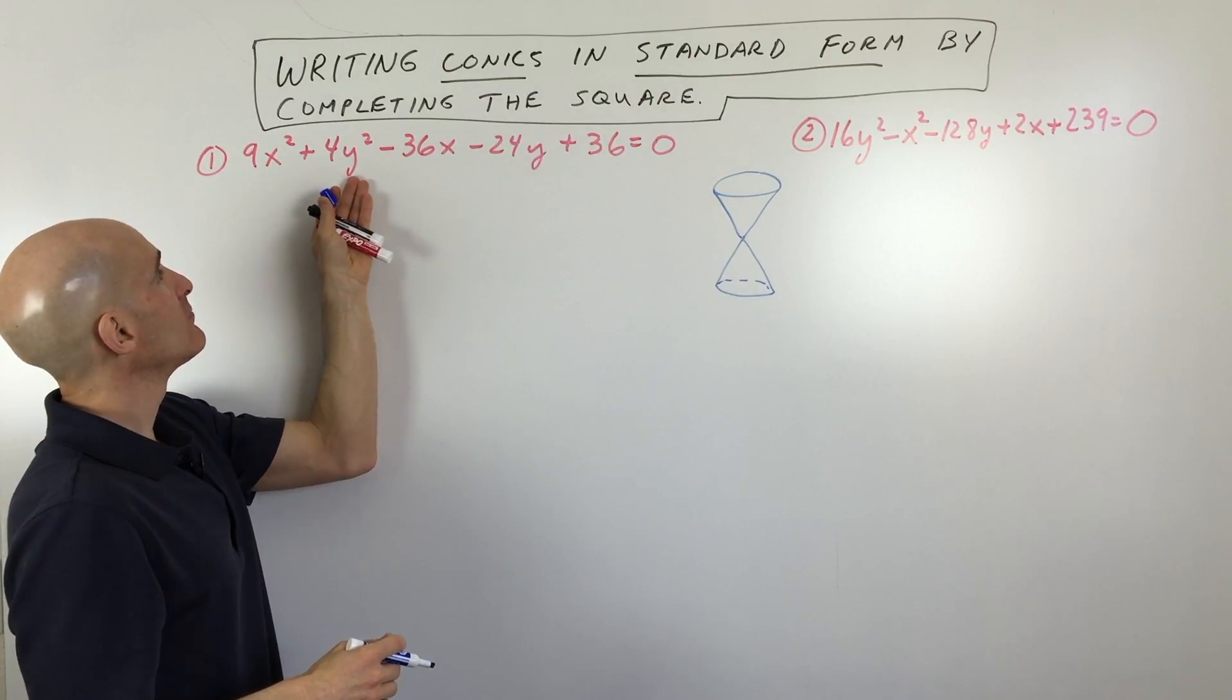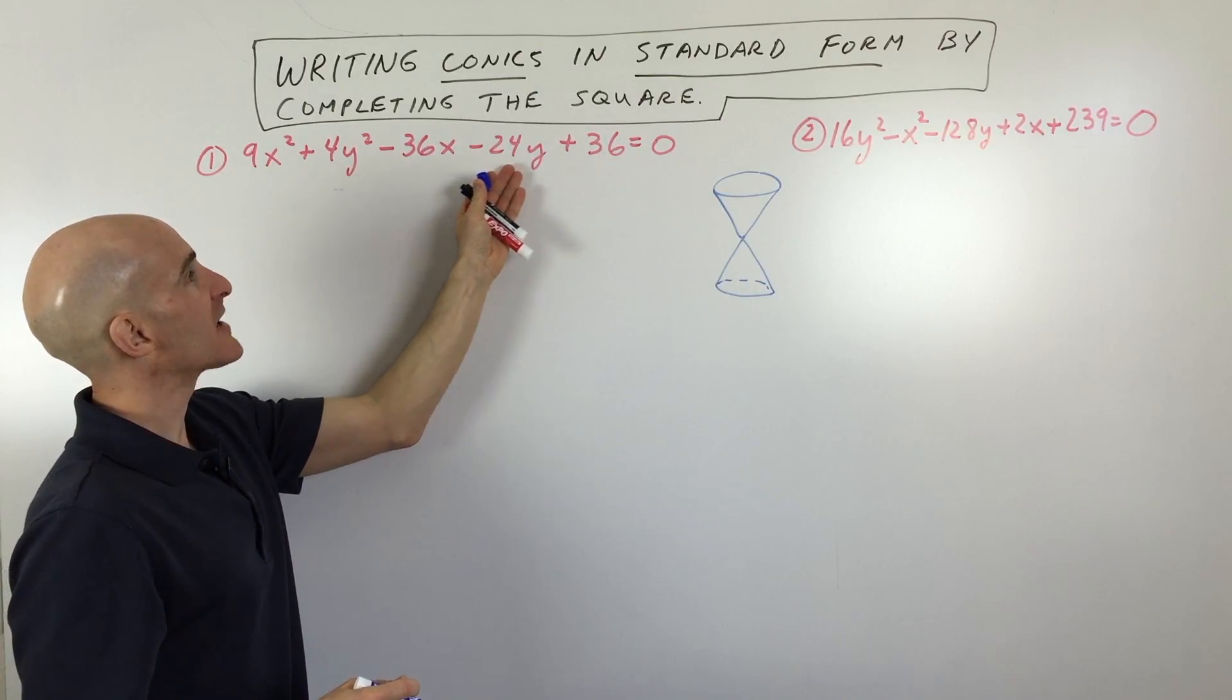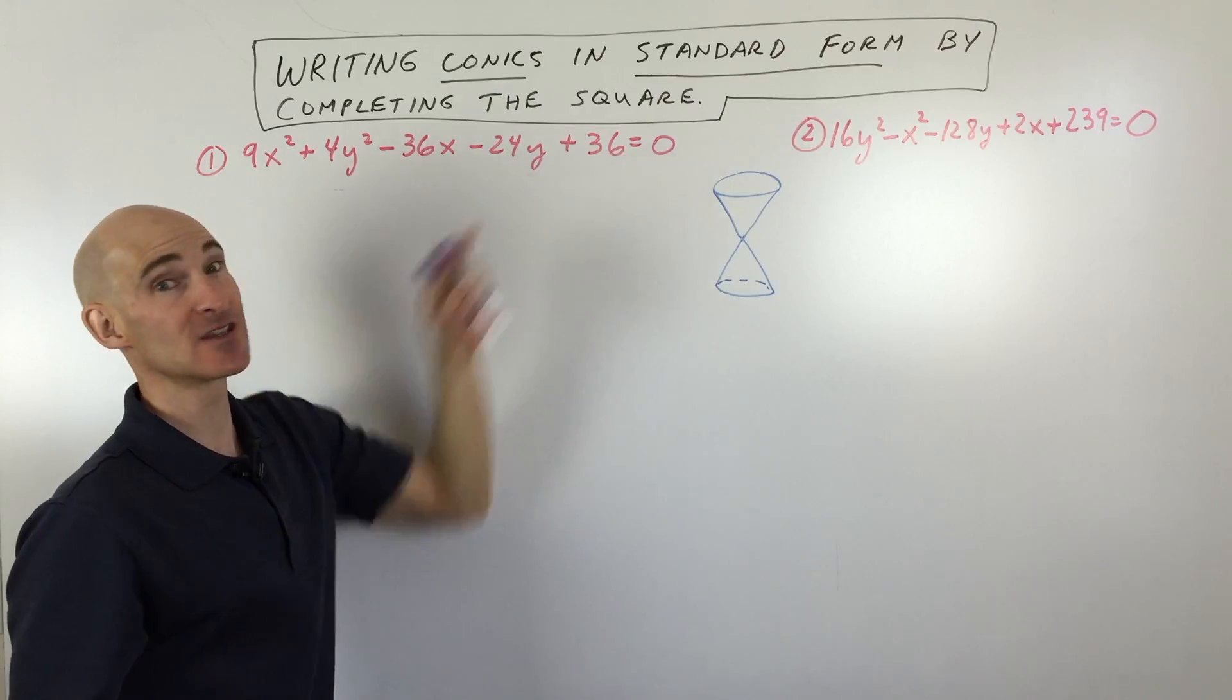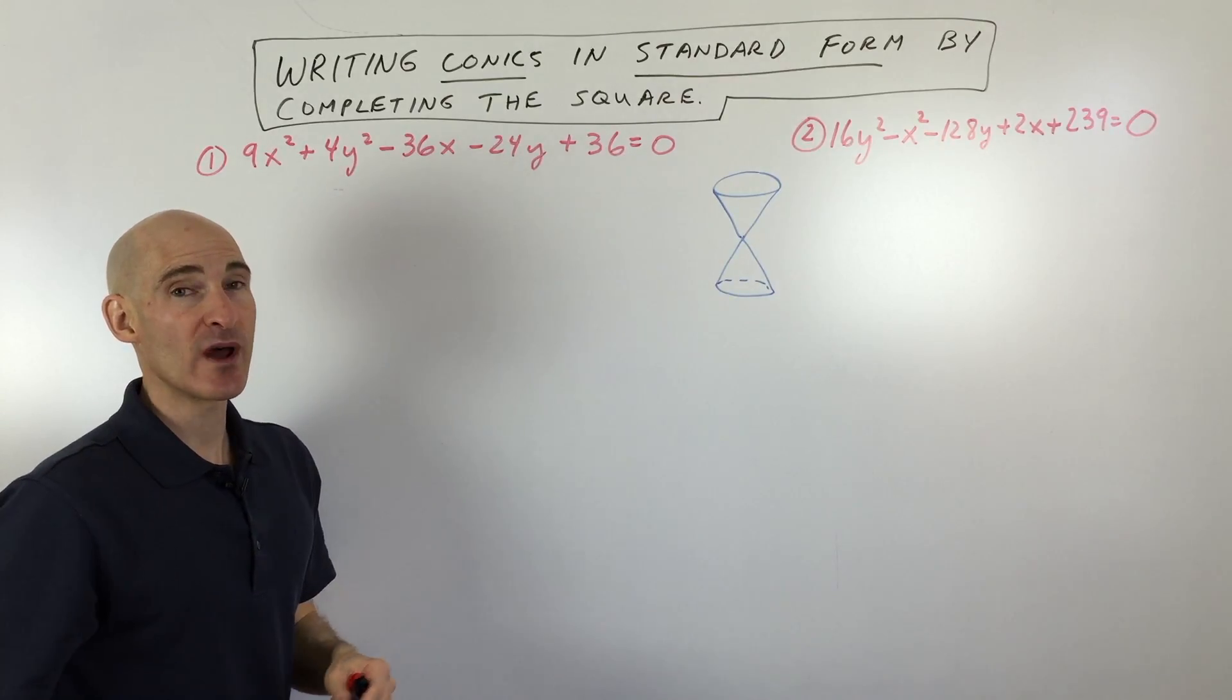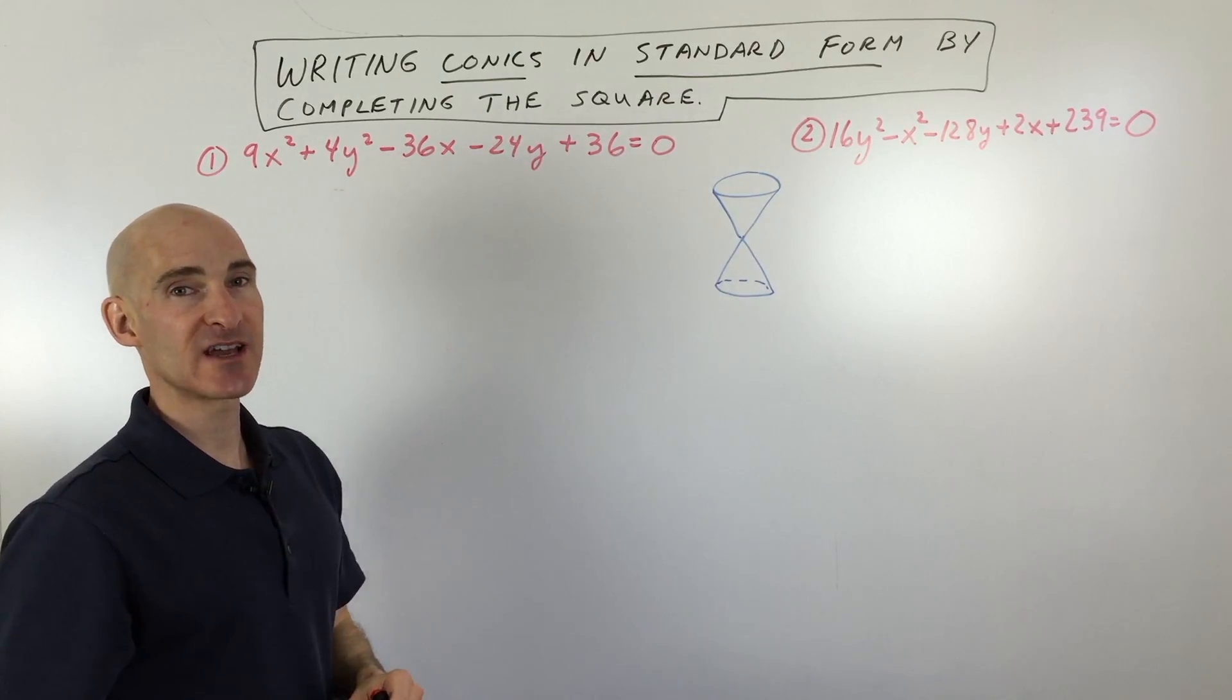Here. 9x squared plus 4y squared minus 36x minus 24y plus 36 equals zero. So the first thing we want to analyze is what type of conic section is it?